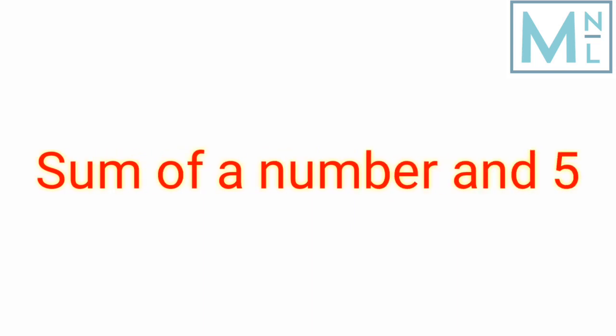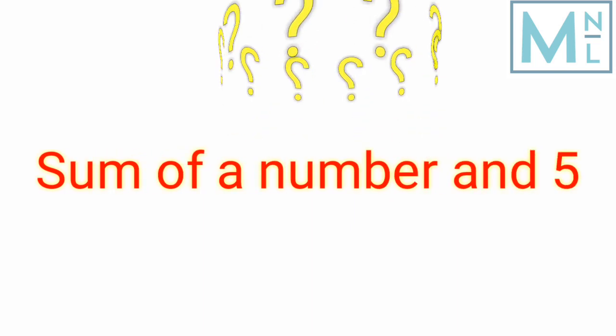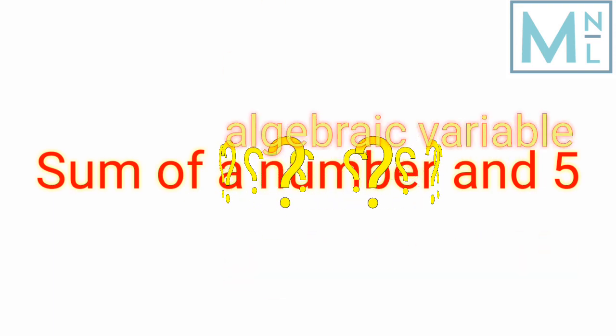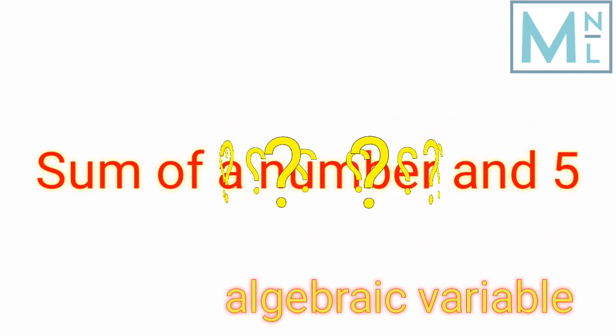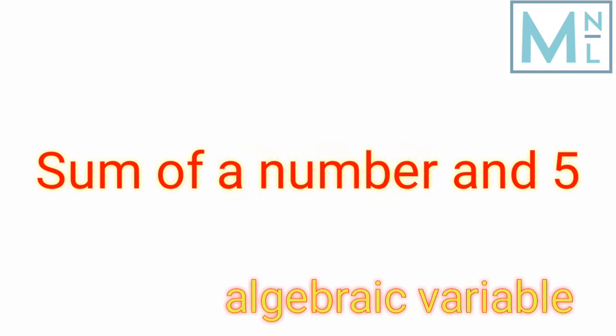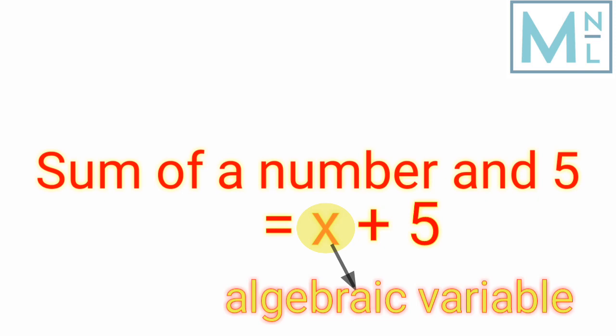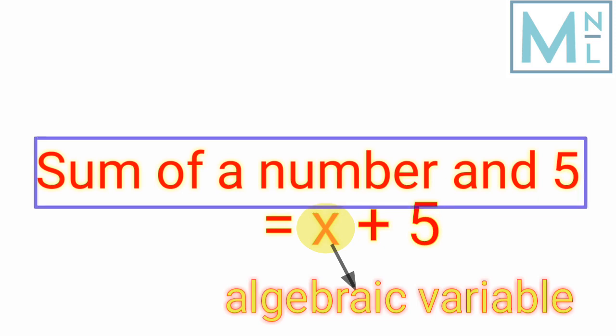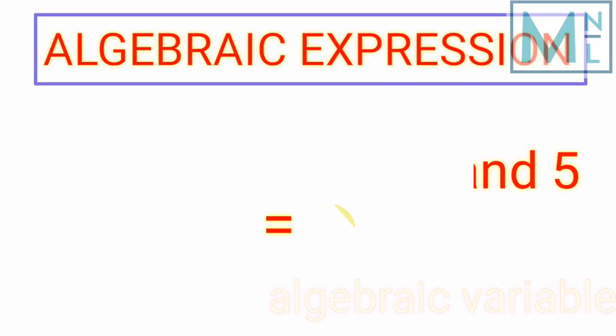If I say sum of a number and five, I will use a variable such as x, y, or z and write x plus five. Because an algebraic variable is used here, this expression is called an algebraic expression.